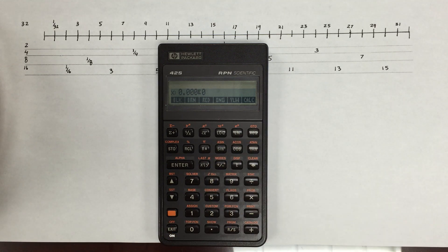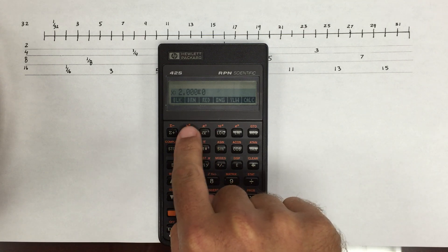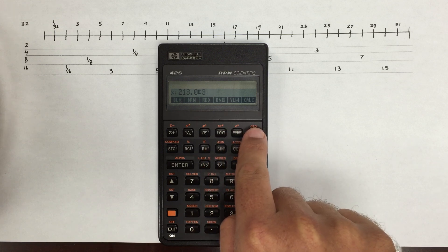So say I have red, brown, orange, and then orange. So I could do red, brown, orange, and orange. Then do the calculate. It'll tell me it's 213 kilo-ohms.